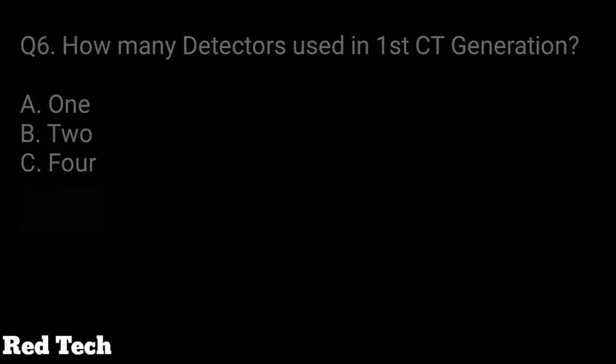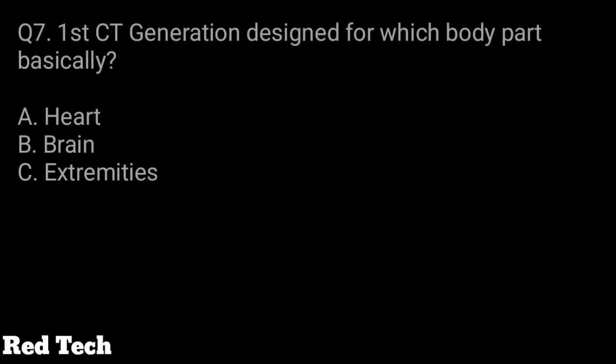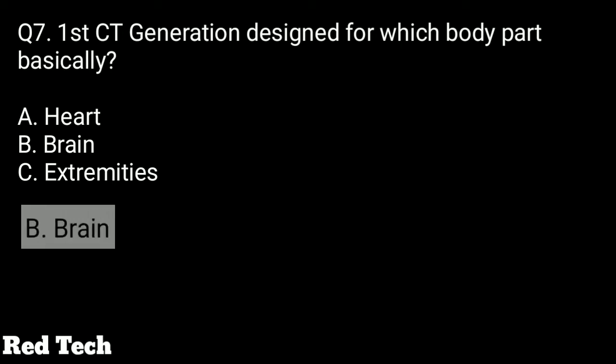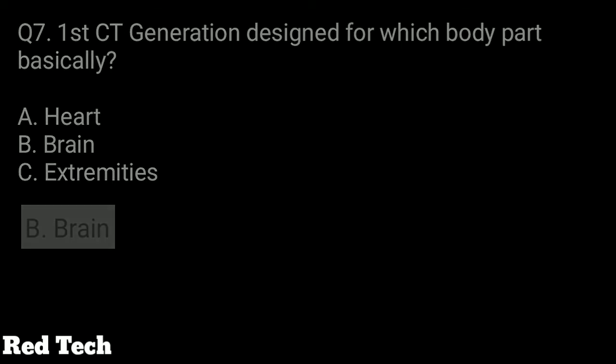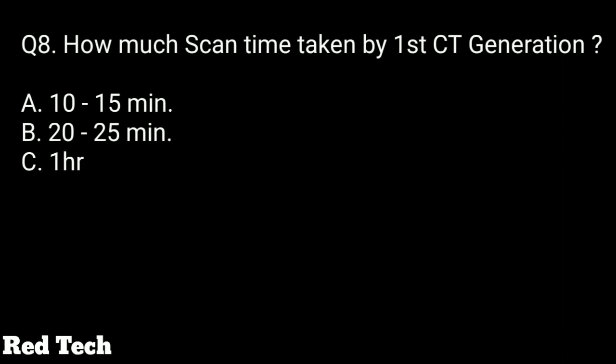Question number seven: the first generation CT was designed for which body part? The options are heart, brain, or extremities. The right answer is the first generation CT was developed for the brain.